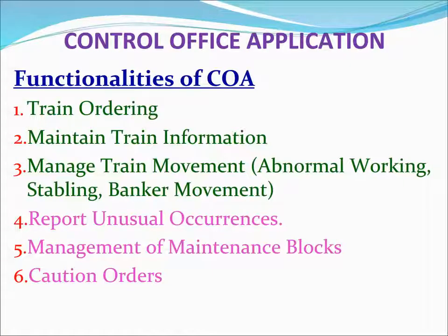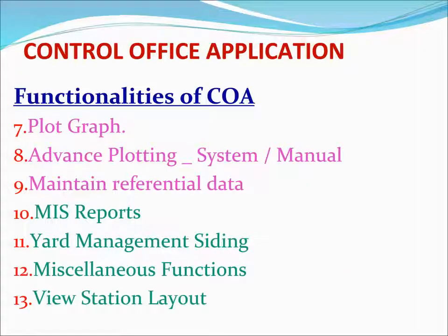The main functionalities of COA include: train ordering; maintaining train information; minute train movement; abnormal working; stabling; banker movement; reporting unusual occurrences; management of maintenance blocks; costs and orders; plot graphs; advanced plotting system or manual; maintaining referential data; MIS reports; Ad Management Siding; miscellaneous functions; and view station layout.